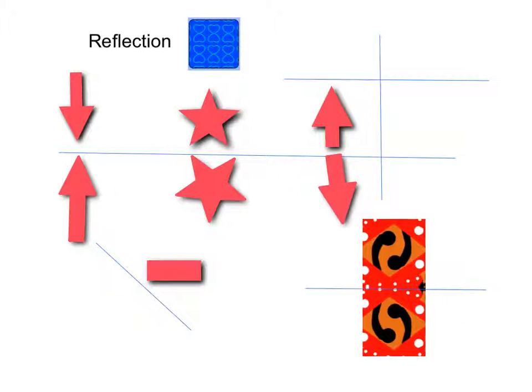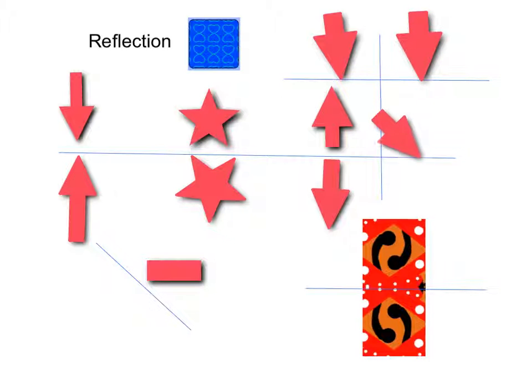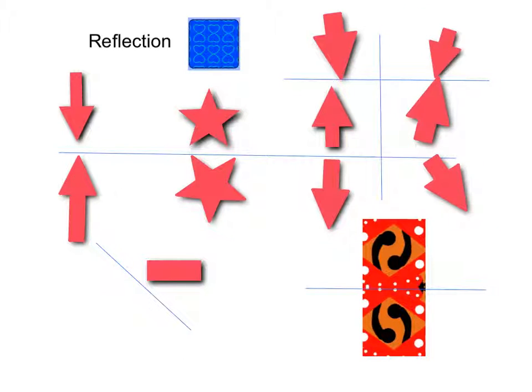First it goes like this, then like this, and like this, and like this, and like this. And now I have reflected the arrow.